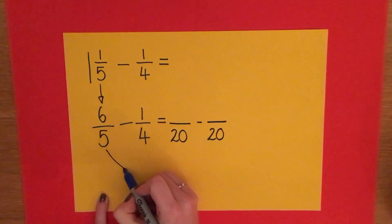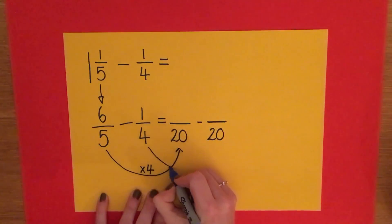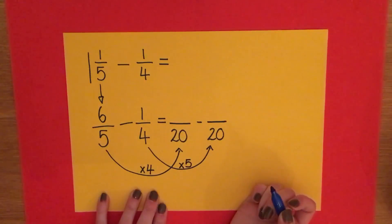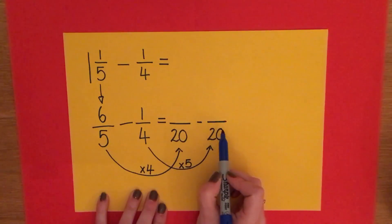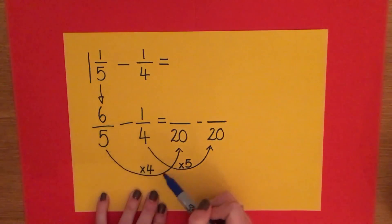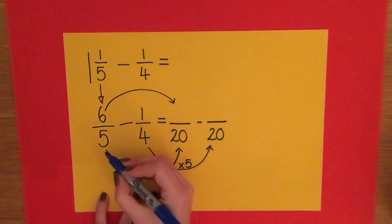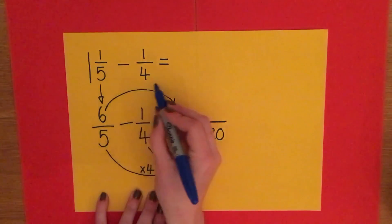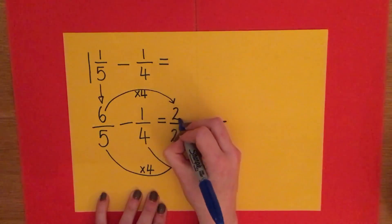I know that because five has to times by the other denominator, which is four, and the four has to times by the other denominator, which is five. So I'm going to end up with so many twentieths take away another load of twentieths. Remember with fractions, whatever you do to the bottom you have to do to the top. To get from five to twenty, I multiplied it by four, so to get from six to my answer I'm going to have to multiply it by four. Six times four is twenty-four.